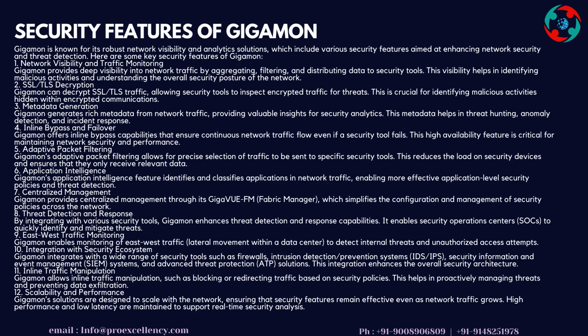Feature 4: Inline Bypass and Failover — Gigamon offers inline bypass capabilities that ensure continuous network traffic flow even if a security tool fails. This high availability feature is critical for maintaining network security and performance. Feature 5: Adaptive Packet Filtering — Gigamon's adaptive packet filtering allows for precise selection of traffic to be sent to specific security tools, reducing the load on security devices and ensuring they only receive relevant data.